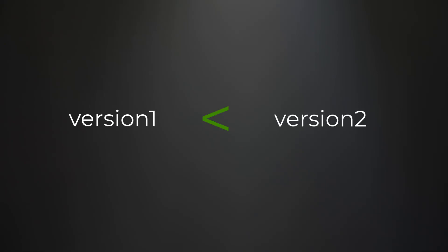For this problem we're given two version number strings, version one and version two, and we have to determine if version one is less than, greater than, or equal to version two. If version one is less than version two we return negative one, if greater we return one, and if they're equal we return zero.